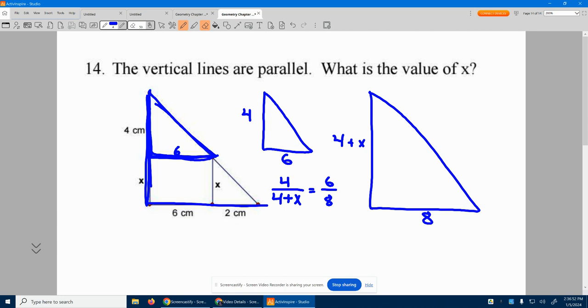So now just cross multiply, basically the means extremes property. 6 times 4 plus X equals 8 times 4. That's 32.